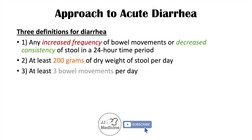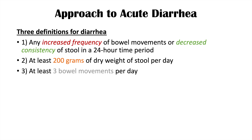The third definition is having at least three bowel movements per day. This is similar to the first definition of increased frequency, and it's a bit easier to use because it has a number associated with it. However, some individuals at baseline may normally have three bowel movements per day, so this can also be difficult to apply. Usually you'll see a combination of these definitions used together.